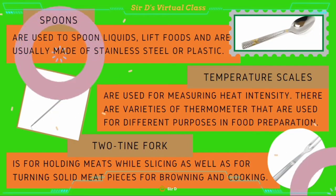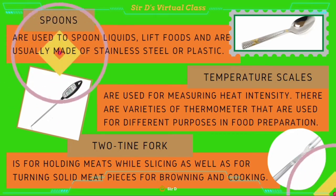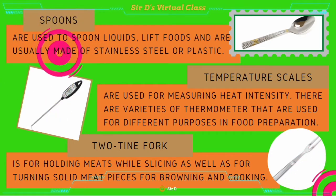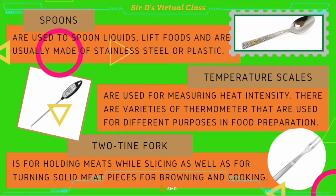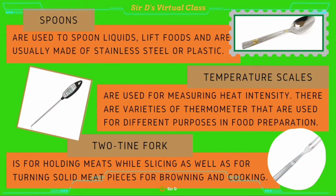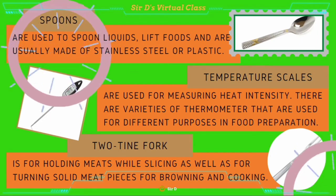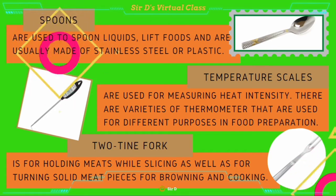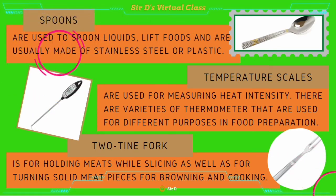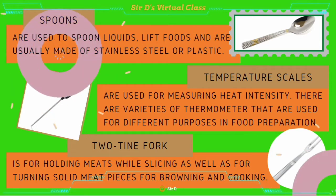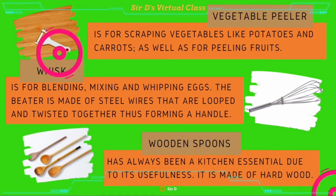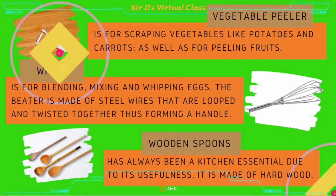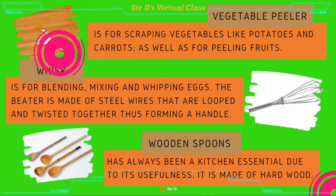Spoons are used to spoon liquids and lift foods, and are usually made of stainless steel or plastic. Temperature scales are used for measuring heating intensity. There are varieties of thermometer that can be used for different purposes in food preparation. Two-tine fork is for holding meats while slicing, as well as for turning solid meat pieces for browning and cooking. Vegetable peeler is for scraping vegetables like potatoes and carrots, as well as for peeling fruits.